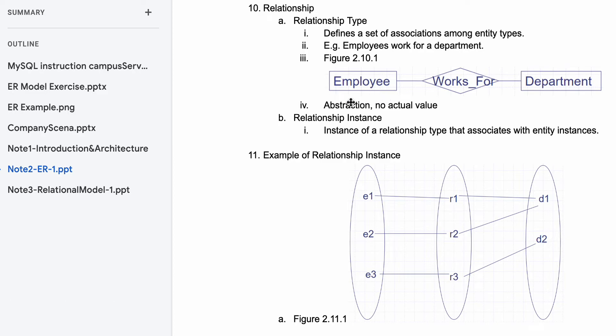There is abstraction here. There's no actual values, just the entities. A relationship instance is an instance of a relationship type that associates with entity instances. We have one relationship instance, 'works for', which associates the employee with the department.